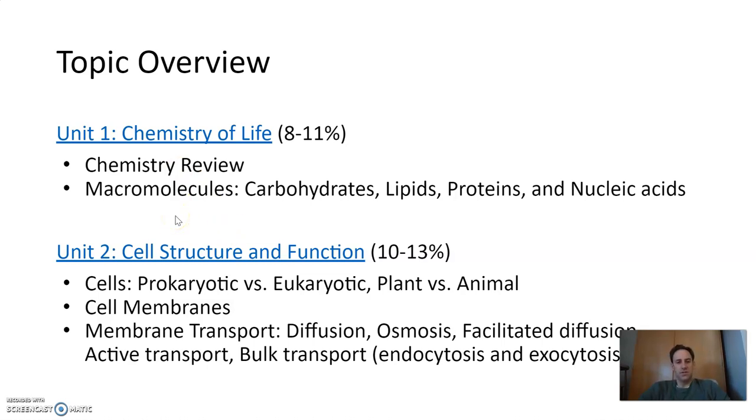Unit two is cell structure and function. We began by looking at just what is a cell, prokaryotic versus eukaryotic, and then plant versus animal. What are the differences between these groups? What are the names of all the organelles? Then we looked at cell membranes and the structure of them and how they enable transport of materials between the inside and outside of the cell. So specifically diffusion, osmosis, facilitated diffusion, active transport, and what we call bulk transport, which is basically endo and exocytosis.